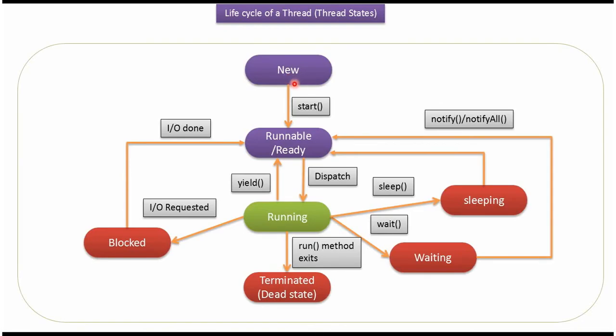From the New state, a thread can go to the Runnable state. From the Runnable state, a thread can go to the Running state. From the Running state, a thread can go back to the Runnable state, or to the Terminated state, or to the Blocked state. From the Blocked state, a thread can go back to the Runnable state.